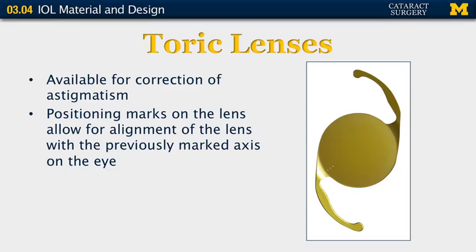Finally, let me speak about toric lenses. These have also been relatively recently introduced and are now available for correction of astigmatism. There are positioning marks on the edge of the lens implant that allow you to line up the lens with previously marked axes on the surface of the eye. The lenses otherwise behave in a similar fashion to the other AcrySof lenses for insertion through smaller incisions.